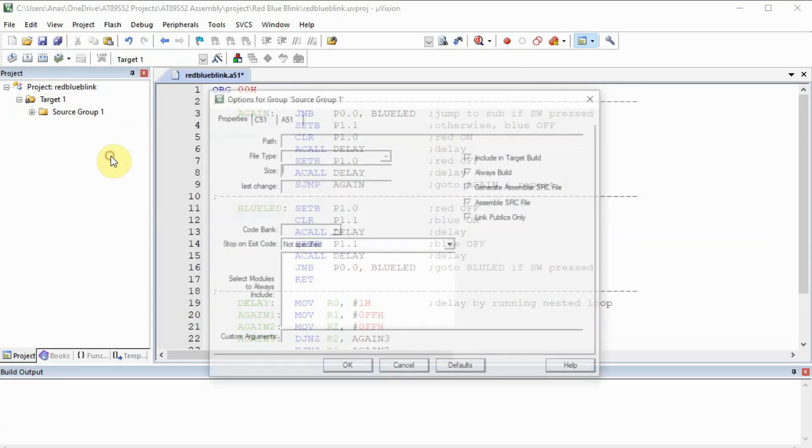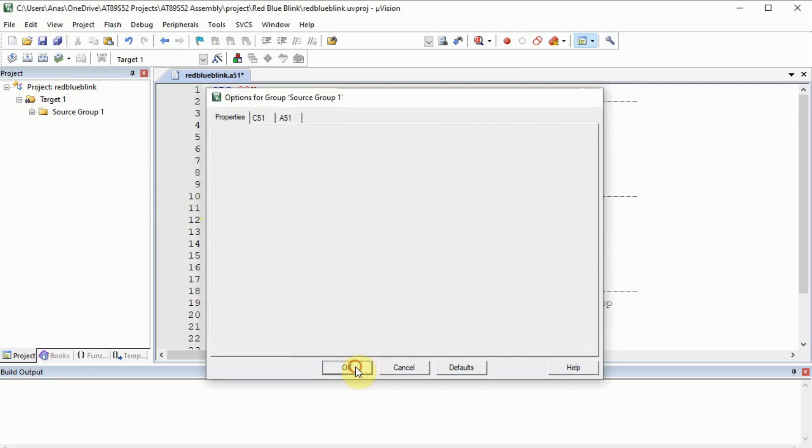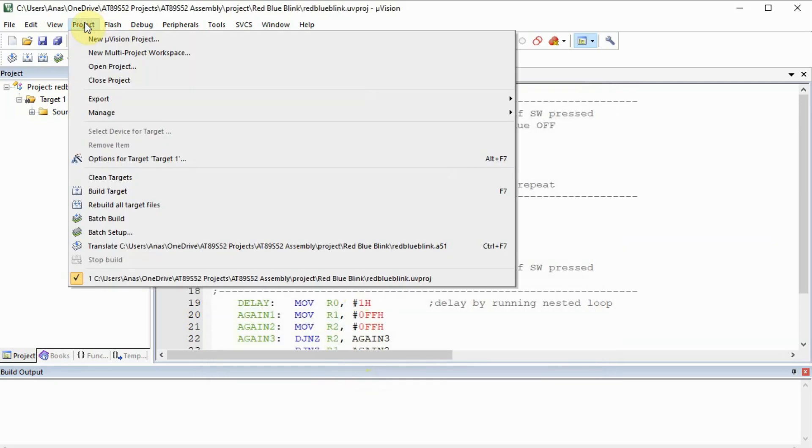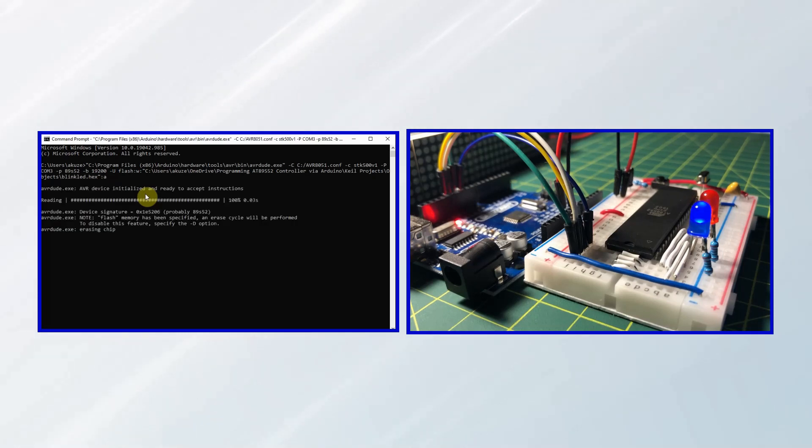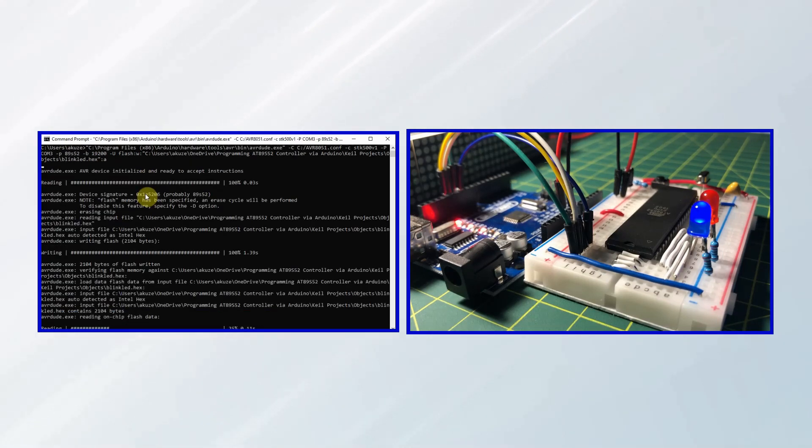The final step is to generate the hex code from the C code by using the Keil IDE. And then we upload the hex code onto the microcontroller using a CMD program. Please watch my previous video where all of this was explained in more detail.